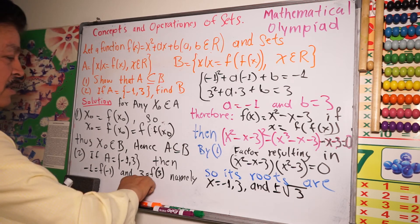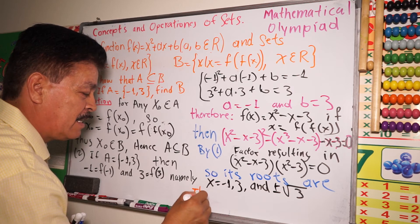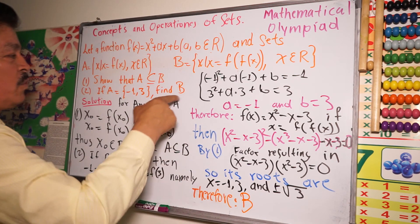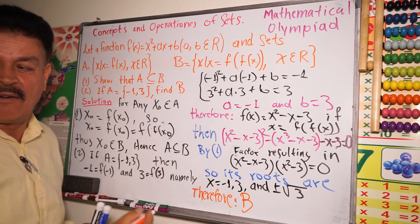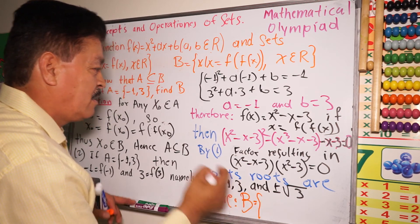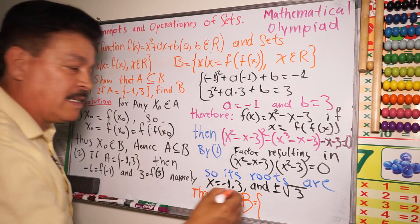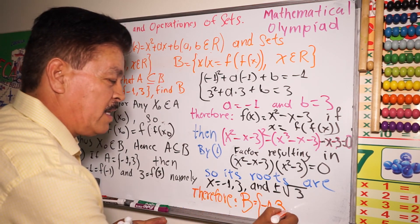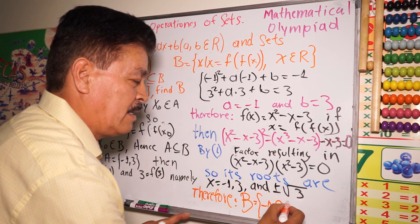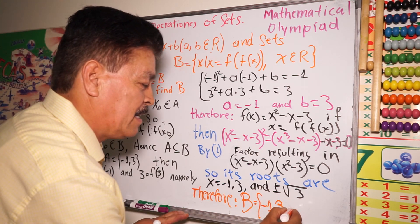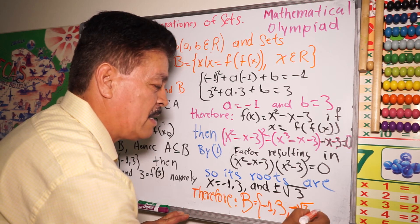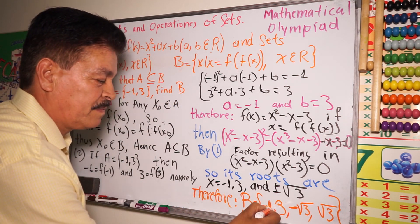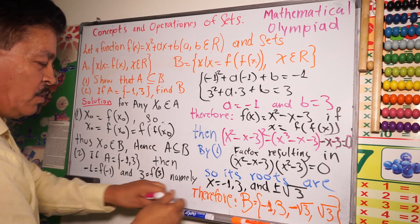Therefore, in conclusion, we need to find B. Since A is a complement of B, B equals {-1, 3, negative square root of 3, positive square root of 3}. That is the set B.